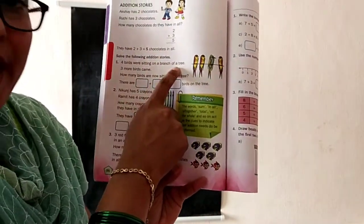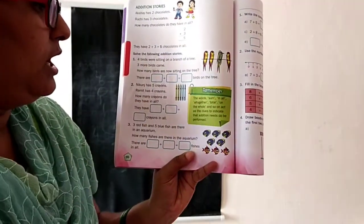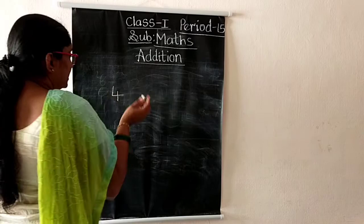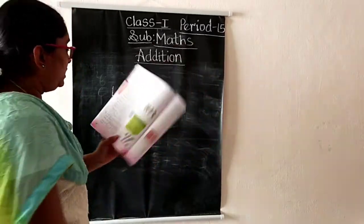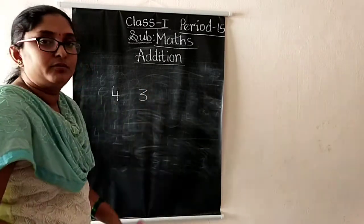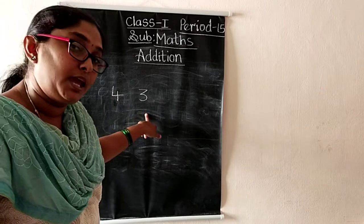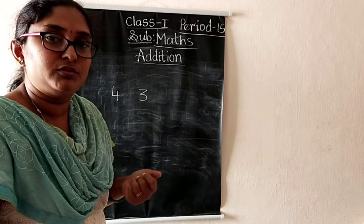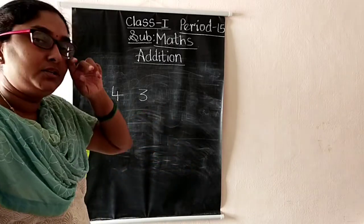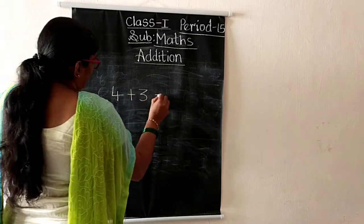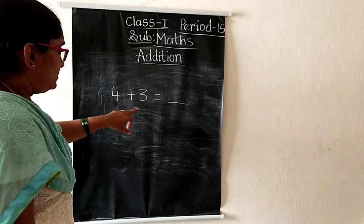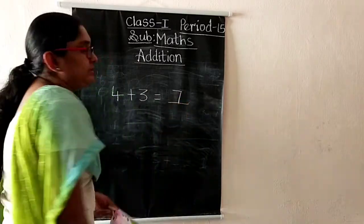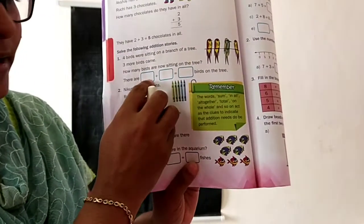Four birds were sitting on a branch of a tree. Three more birds came. How many birds are now sitting on the tree? So already four birds are sitting, three birds came — they are asking total. So we have to do addition: four plus three. Four in the mind, take three fingers: four after five, six, seven. So seven birds are sitting on the branch of a tree.